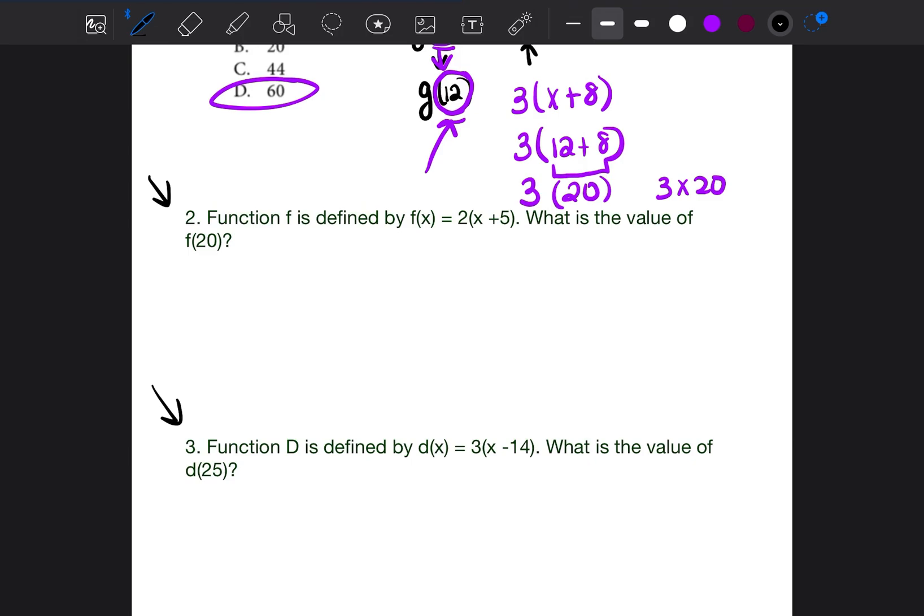Function f is defined by f(x) = 2x + 5. What is the value of f(20)? In this case, the function is f. So the equation for the function is 2x + 5. They're telling us f(x) is f(20). That means wherever we have the x in the equation, we're going to input 20. So 2(20) + 5. We're going to write down the order of operations, PEMDAS: parentheses, exponents, multiply, divide, add, subtract. We're going to do the parentheses first.